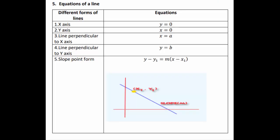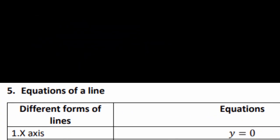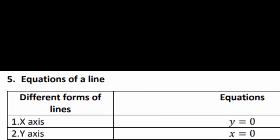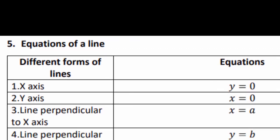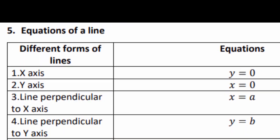Now let us consider the various forms of equations. The equation of the x-axis is y = 0, since the y-coordinate is always 0 on the x-axis. The equation of the y-axis is x = 0. For a line perpendicular to the x-axis, the equation is x = constant (say x = a), meaning the x-coordinate remains constant throughout. For a line perpendicular to the y-axis, the equation is y = constant (say y = d).